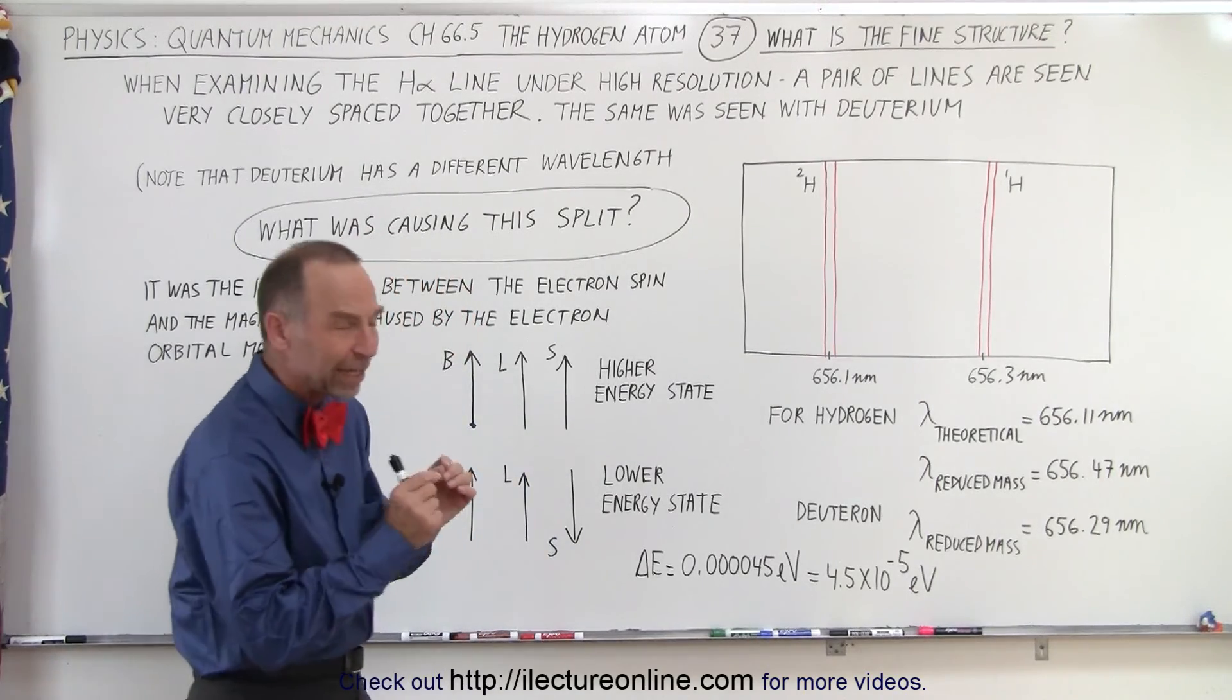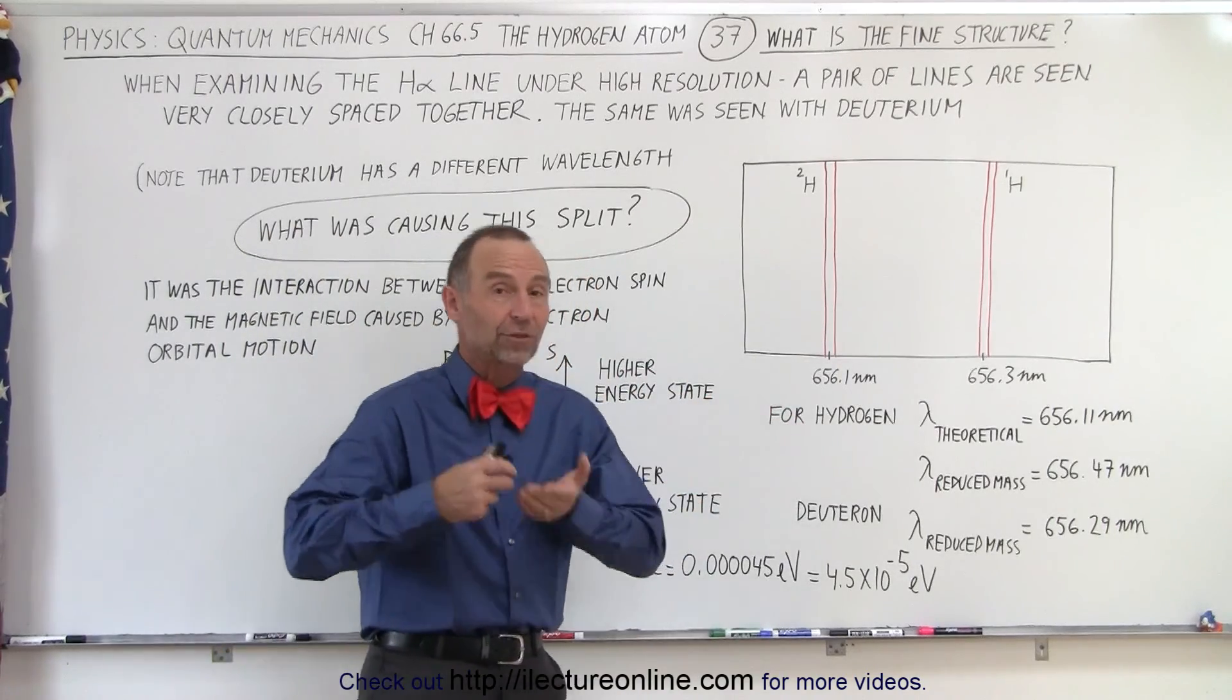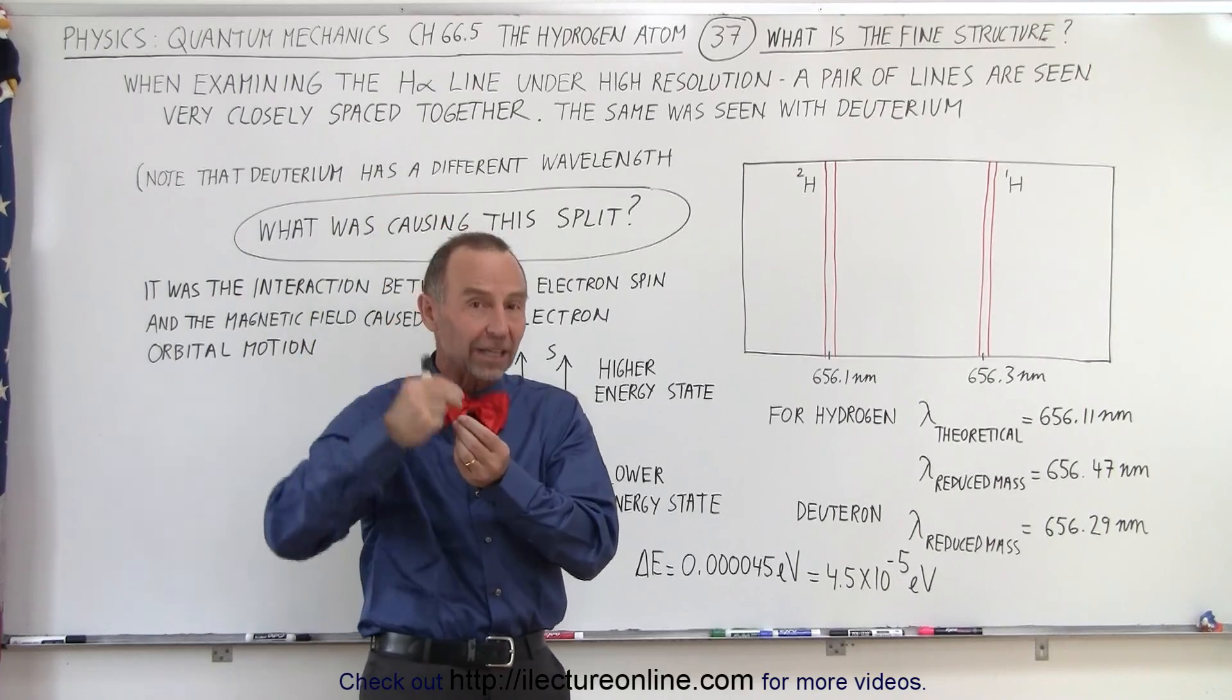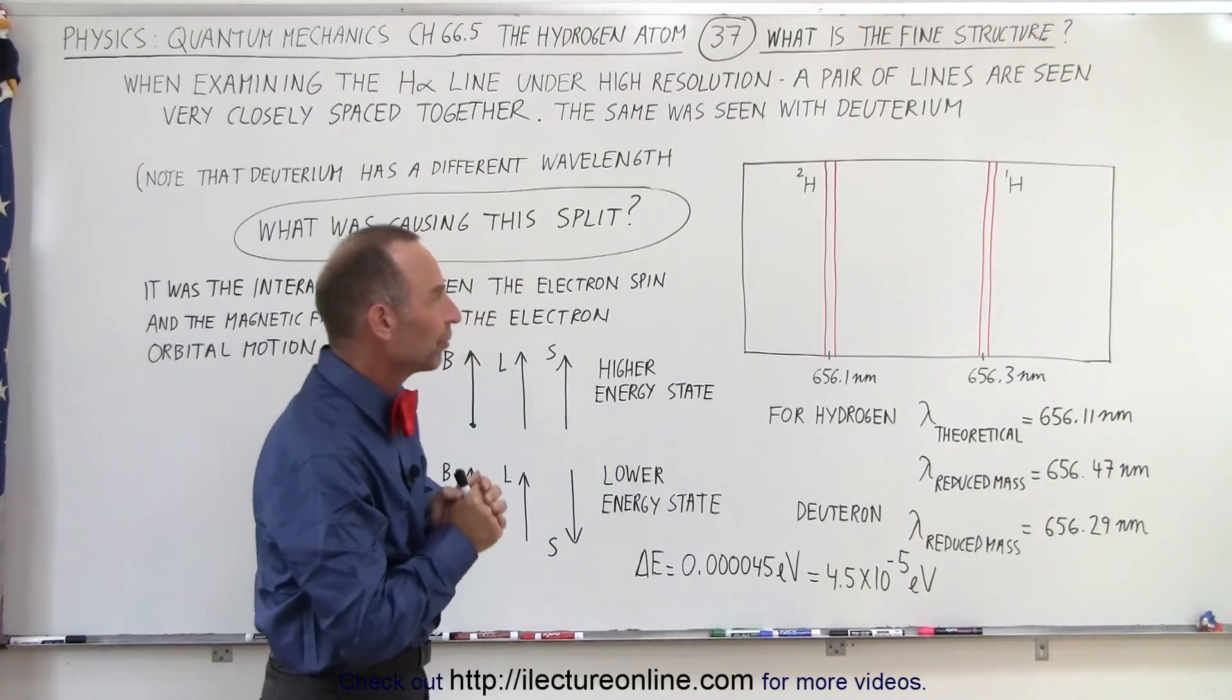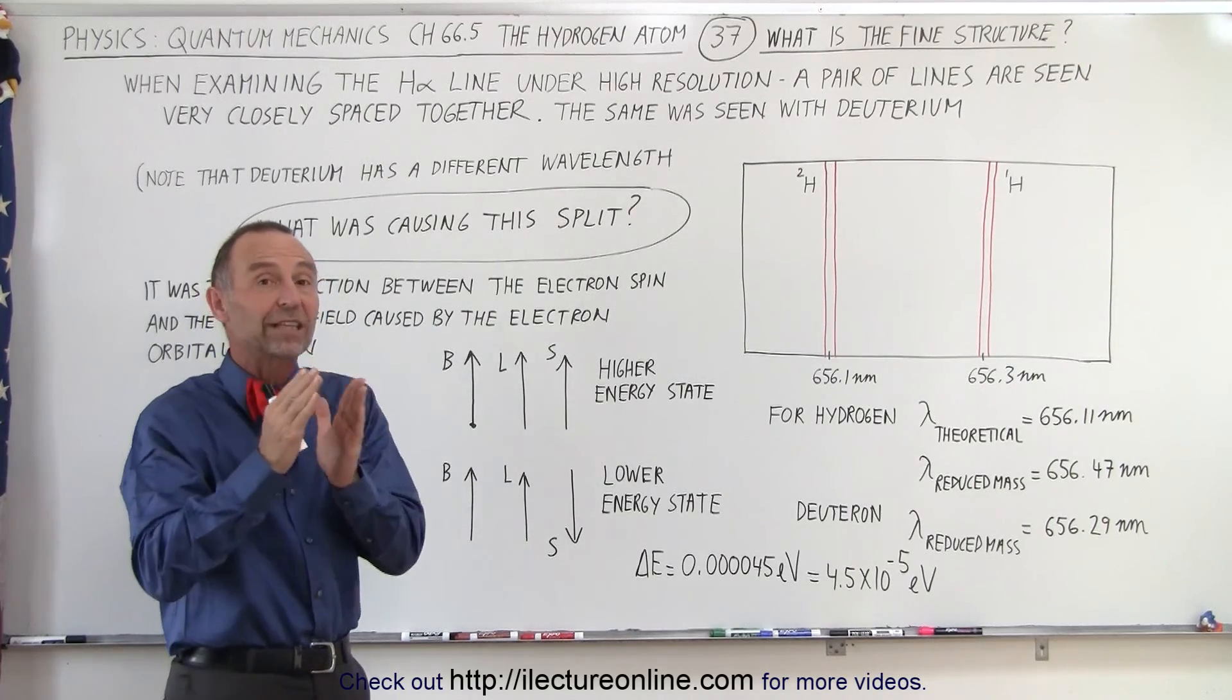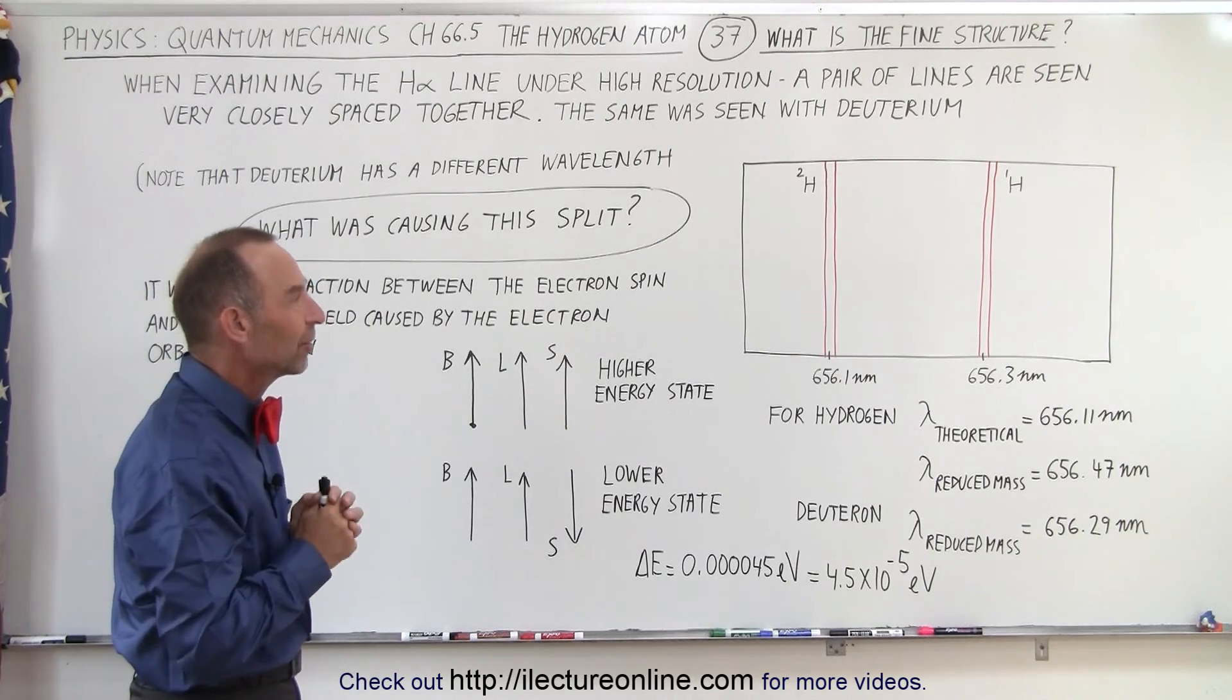Well it turns out when we take a very careful look at the H-alpha line, and of course the H-alpha line is the line when the electron jumps from the third energy level down to the second energy level, gives us that beautiful red color. When we look at that line very carefully under very high resolution, we actually see that it's a doublet, two very closely spaced lines together.